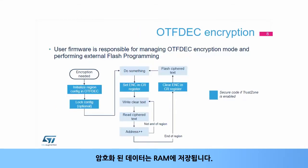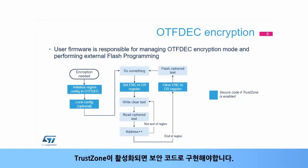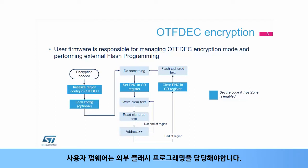The cipher data is stored in RAM. This slide describes the sequence used to encrypt the contents of a memory buffer. It has to be implemented in secure code when TrustZone is enabled. User firmware is responsible for external flash programming.